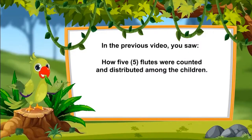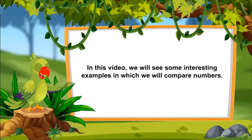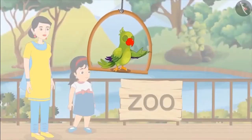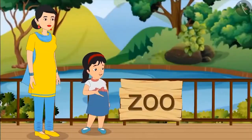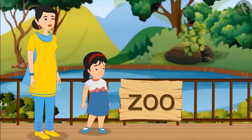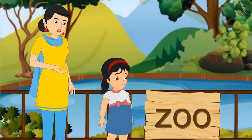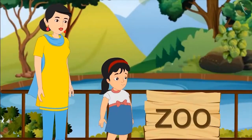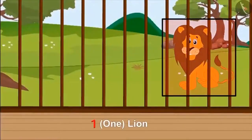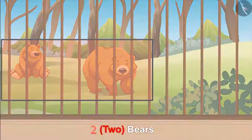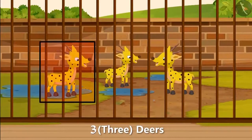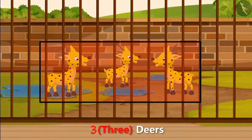5 flutes were counted and distributed among the children. In this video we will see some interesting examples in which we will compare numbers. Today Pinkie has gone to the zoo with her mother. There is 1 lion in one paddock, 2 bears in another, 3 deer in the next paddock.